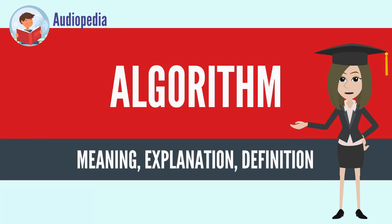Algorithm. In mathematics and computer science, an algorithm is an unambiguous specification of how to solve a class of problems. Algorithms can perform calculation, data processing, and automated reasoning tasks.